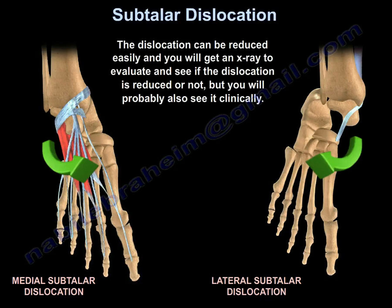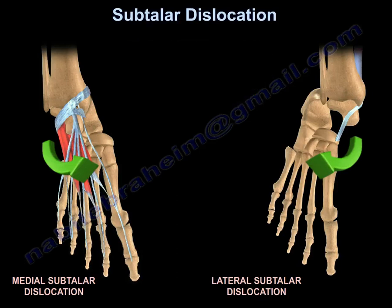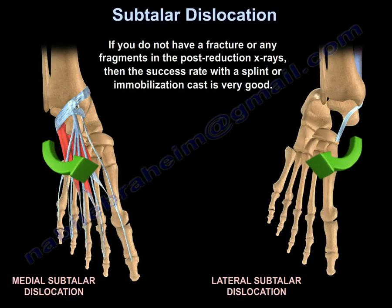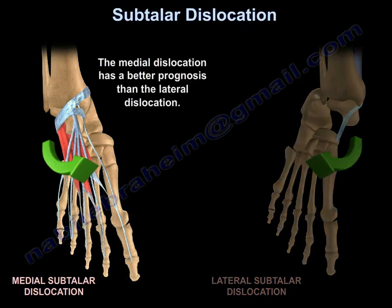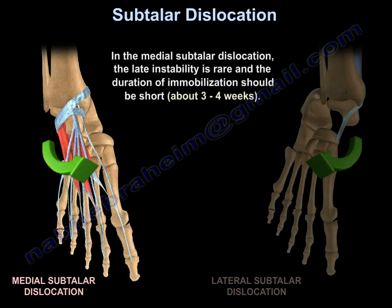The dislocation can often be reduced easily, and you get an x-ray to evaluate if the dislocation is reduced — though you would probably see it clinically as well. If you don't have a fracture or any fragments on post-reduction x-rays, the success rate with a splint or cast immobilization is very good. Medial dislocation has a better prognosis than lateral. In medial subtalar dislocation, late instability is rare, and the duration of immobilization should be short — about 3–4 weeks.